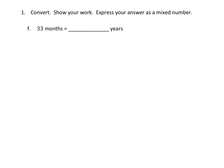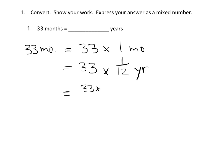So on this one, same basic problem, only now we are converting 33 months into years. So same process. 33 months, and that's equal to 33 times 1 month. And since we want to convert it into years, one month is equal to a twelfth of a year. So that's 33 times 1 twelfth of a year. And so 33 times a twelfth is 33 times 1 over 12 years.